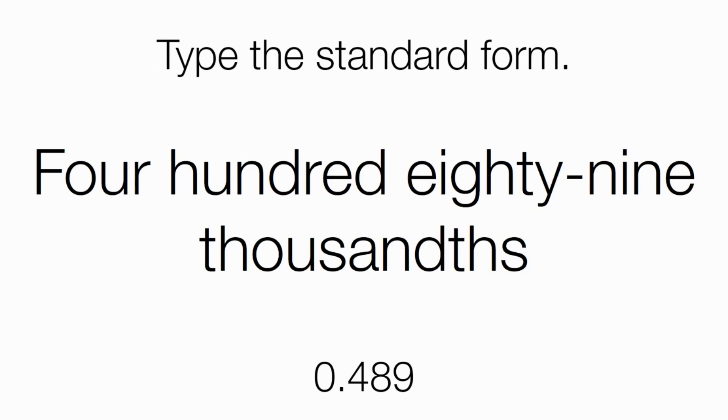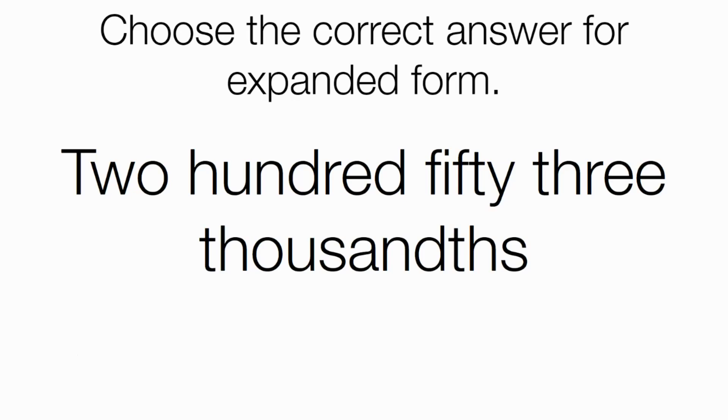And we're going to switch it up again. Please choose the correct answer that shows the correct expanded form for two-hundred-fifty-three thousandths. And the correct expanded form for this number looks like this. So if you look at the number in standard form, you can see that I have two-tenths, two times a tenth. I have five copies of a hundredth, five times a hundredth. And then I have three copies of a thousandth, so three times a thousandth.